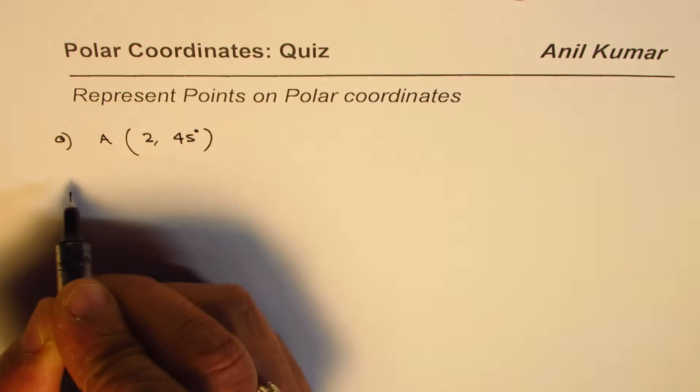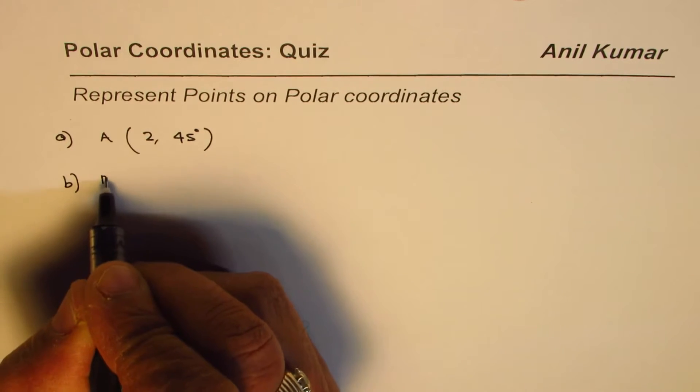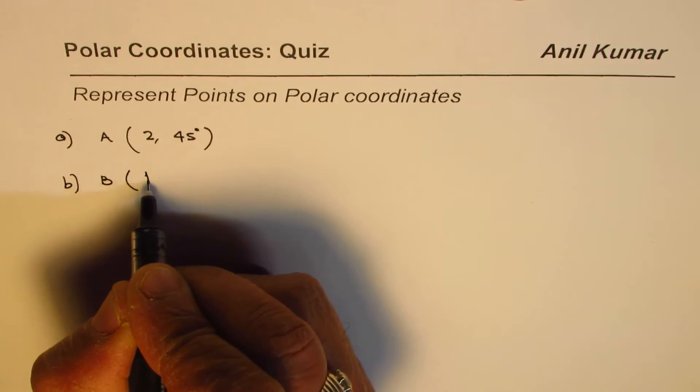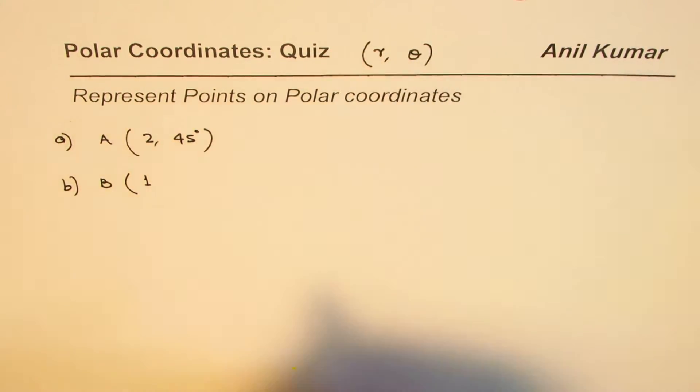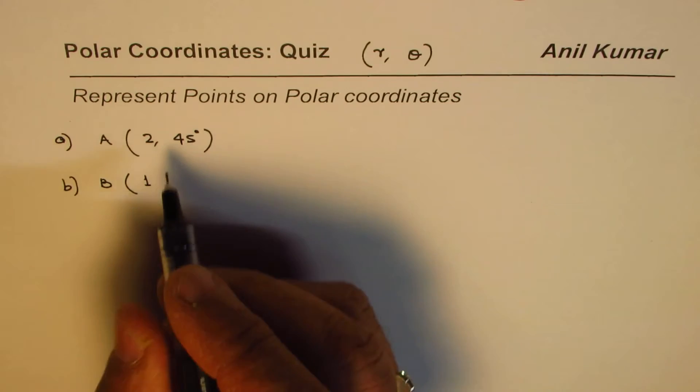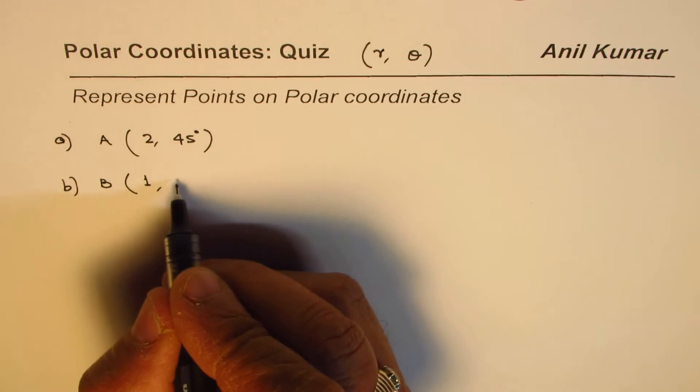Point B, let it be r as 1. Normally we'll represent polar coordinates in r and theta. Theta could be in degrees or in radians. Let us take a few points in degrees.